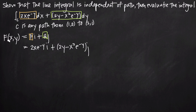Now, how do we tell whether or not this vector field is conservative? A conservative vector field has to meet two conditions. First, it has to be open and simply connected. If it is, then we also have to show that the partial derivative of p with respect to y is equal to the partial derivative of q with respect to x. If both those things are true, that proves that the vector field F is a conservative vector field.